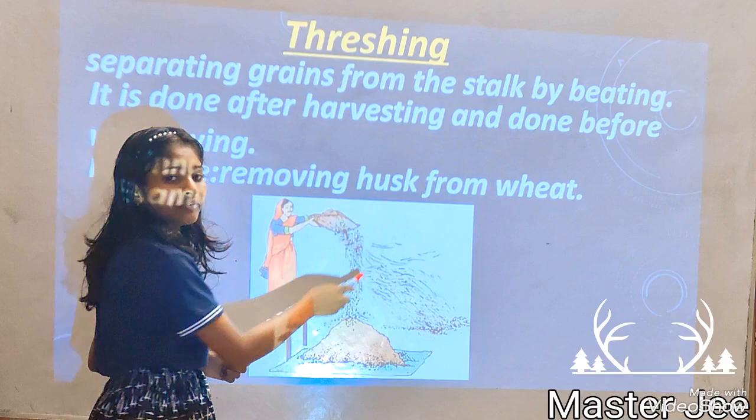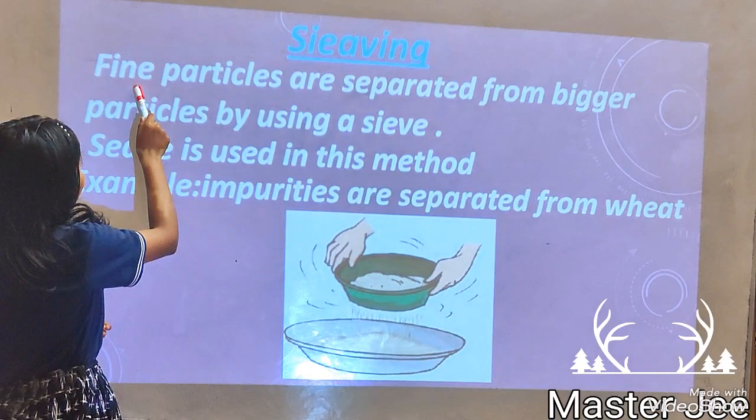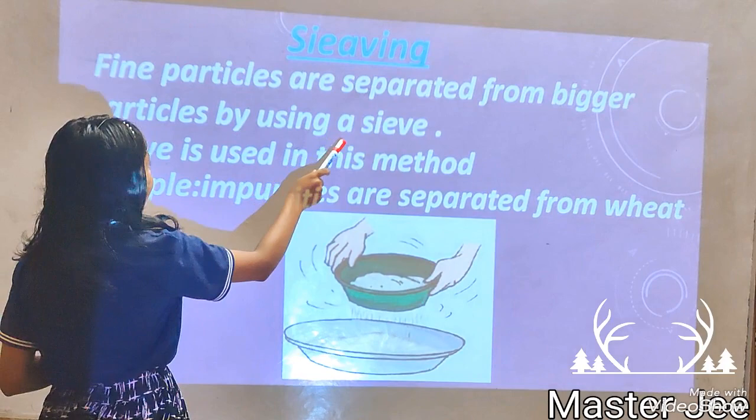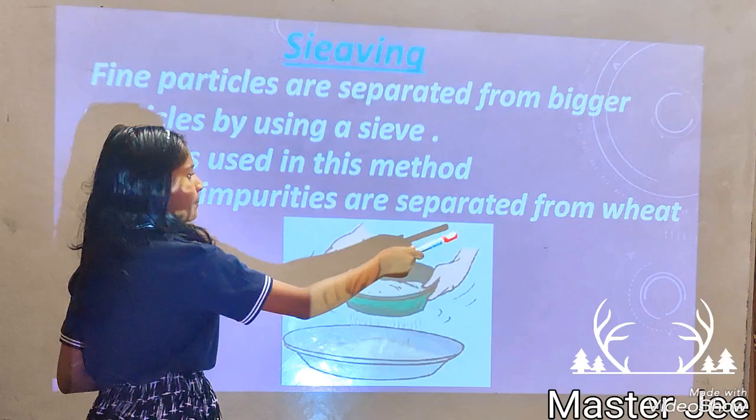Sieving. Sieving is a process in which the fine particles are separated from the bigger particles by using a sieve. A sieve is used in this method. For example, impurities are separated from the wheat.